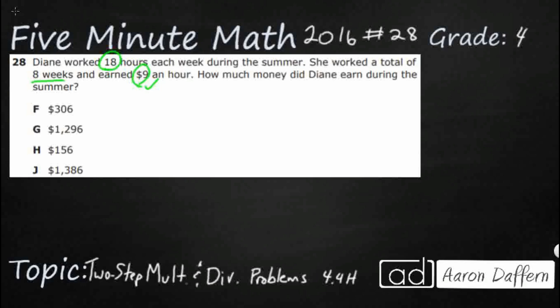So Diane worked 18 hours each week and she worked a total of eight weeks. You notice that we have the same number of hours each week, so that lets me know that we are dealing with equal groups. Whenever we see equal groups, we should be thinking multiplication or division. So let's see if I can represent this with a strip diagram.